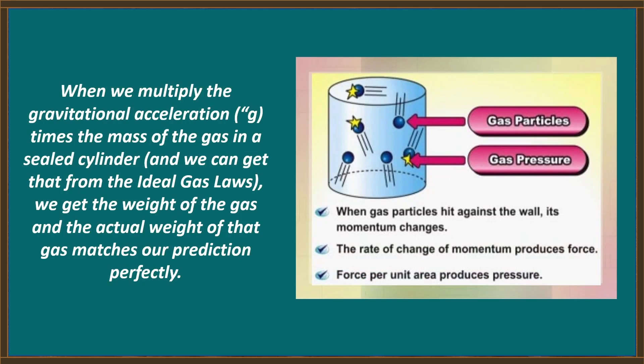So when we multiply the gravitational acceleration times the mass of the gas in a steel cylinder, and we can figure out what that mass is from the ideal gas laws by knowing the pressure, the volume, and the temperature, we get the weight of the gas. And the actual weight of that gas that we measure matches our prediction perfectly.